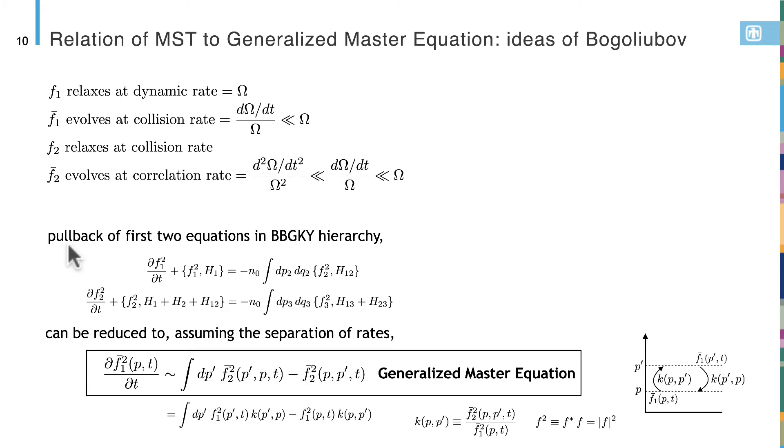Now let's take a pullback of the first two equations. We see that we get the Poisson bracket as expected. And on the right hand side, we get something which is starting to look like a collision operator, a classic collision operator. We get a similar equation for the two particle. This can be reduced, assuming separations of rates, to this form, which is a generalized master equation, where if you identify F_2 over F_1 as K, it is the form that I talked about on the first slide.